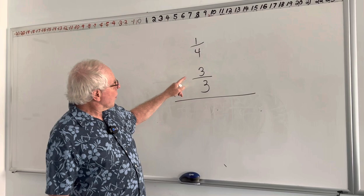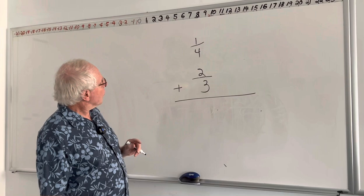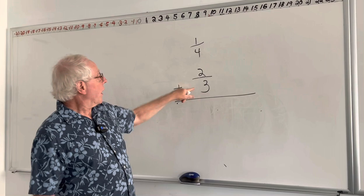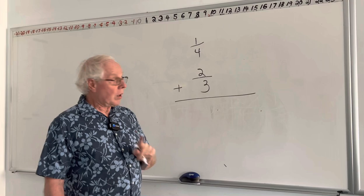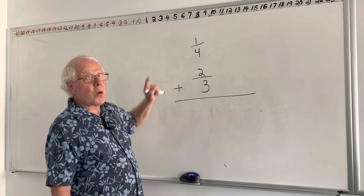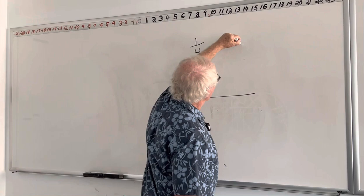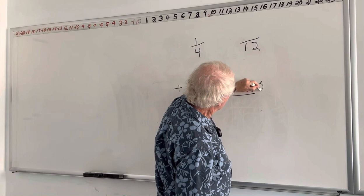We can't add them directly because the denominators are different. It's like someone saying how much is 3 apples and 4 oranges — we need a common term like 'pieces of fruit' to say 3 apples and 4 oranges is 7 pieces of fruit. We want to find another name for each fraction that has a common denominator. What number do both 4 and 3 go into? 12! 3 goes into 12 and 4 goes into 12. One way to get a common denominator is to multiply the two denominators: 4 times 3 is 12. It won't always be the lowest common denominator, but it will be a common denominator. So our denominator is going to be 12 for both fractions.